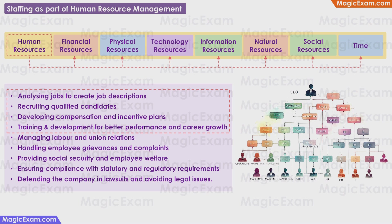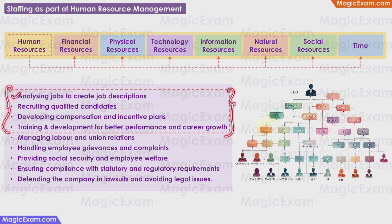Important activities covered under human resource management include: analyzing jobs to create job descriptions, recruiting qualified candidates, developing compensation and incentive plans, training and development for better performance and career growth, managing labor and union relations, handling employee grievances, providing social security and employee welfare, ensuring compliance with statutory and regulatory requirements, and defending the company in lawsuits. The first four of these — job descriptions, recruiting, compensation plans, and training and development — are part of the staffing function. So staffing itself is a part of human resource management.